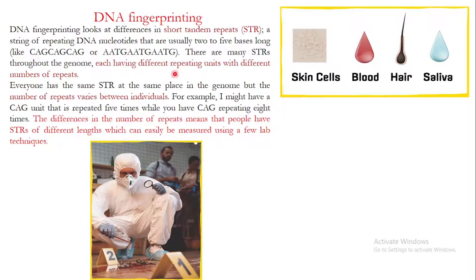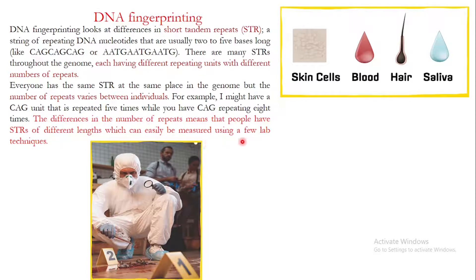DNA fingerprinting looks for these differences. For example, I might have a CAG unit repeated five times while you have it repeated eight times. The STR is the same, but the number of repetitions differs between individuals. This difference in repeat number means people have STRs of different lengths, which can be easily measured using lab techniques like DNA fingerprinting.